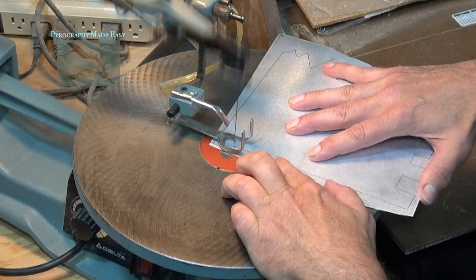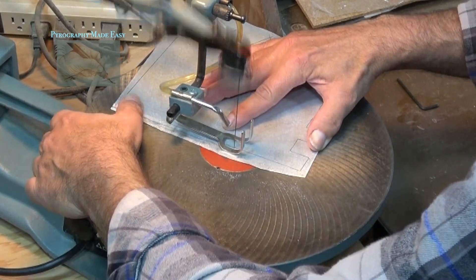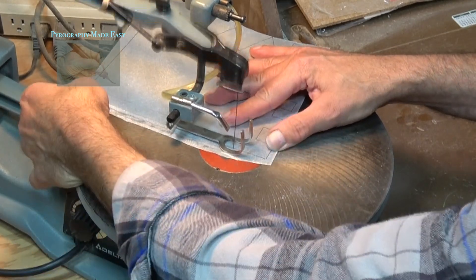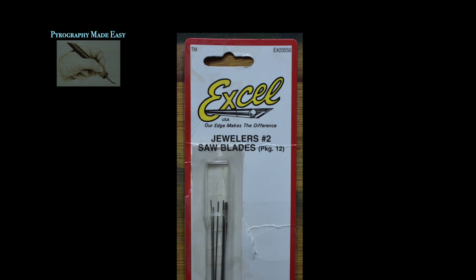To cut out the design Todd is using a scroll saw equipped with a fine tooth number two jeweler's blade. Todd's package of blades is very old so this brand might not be available anymore. But you're after the jeweler's number two. These photos show you how small and fine the teeth are on the blades.